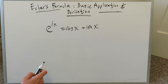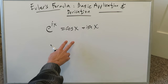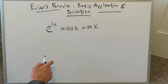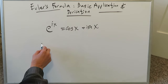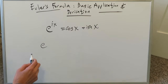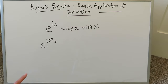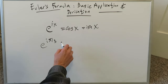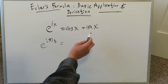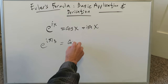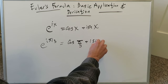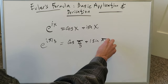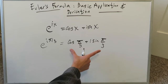Anything in this exponential form can very well be converted into the trigonometric form. A good example could be e to the power of i pi over 3. You can convert it into this form by doing cosine(π/3) plus i sine(π/3).